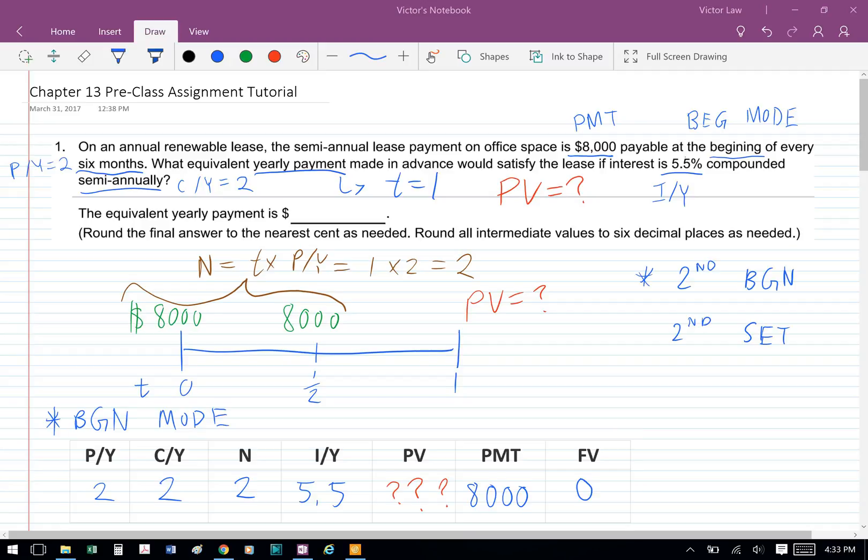Next, we can fill the number into the boxes and plug it into our financial calculator. So before we can plug in the financial calculator, first we need to set it to BGN mode, because the payments are made at the beginning of the period. So what we do is we click on second function, and then click BGN, and then we click second function again, and then click set.